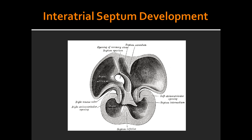So based on what we just talked about, what is the reason why there would be a patent foramen ovale? The reason for a patent foramen ovale is because there would be a failure of septum primum and septum secundum to fuse after birth.